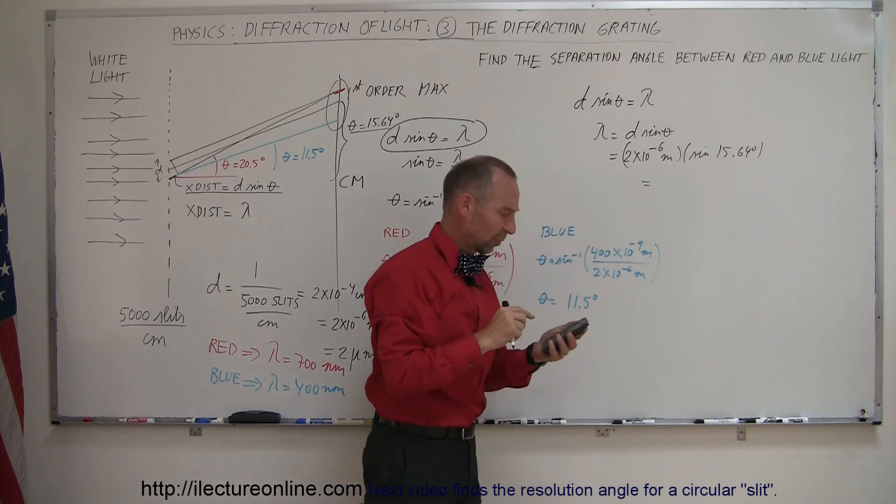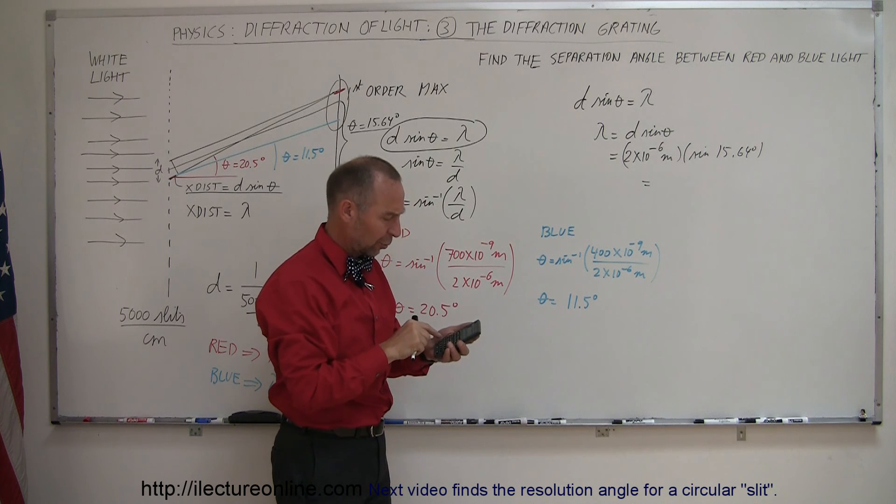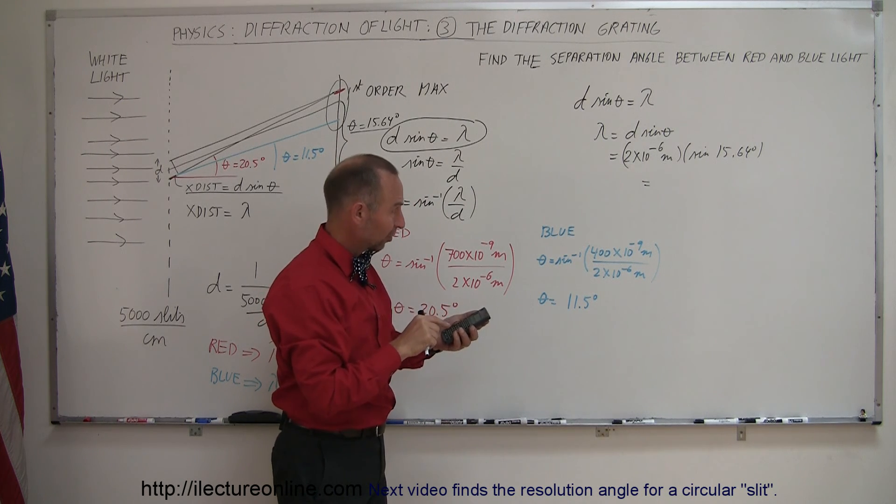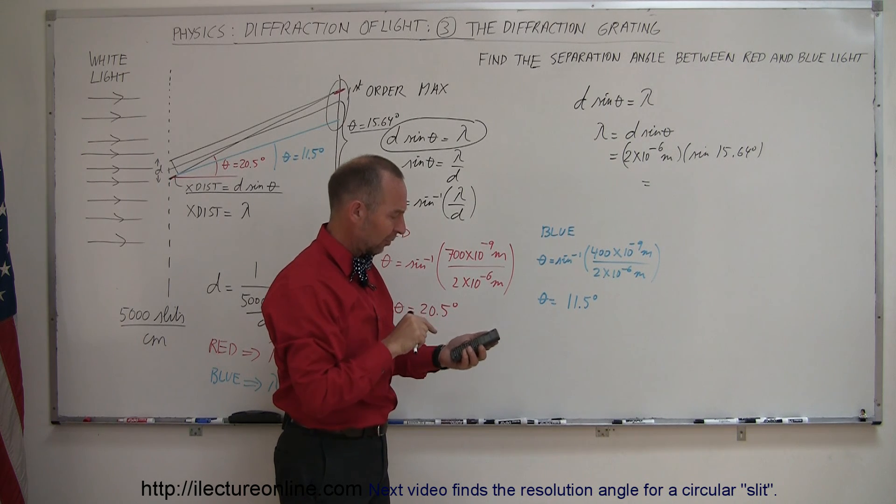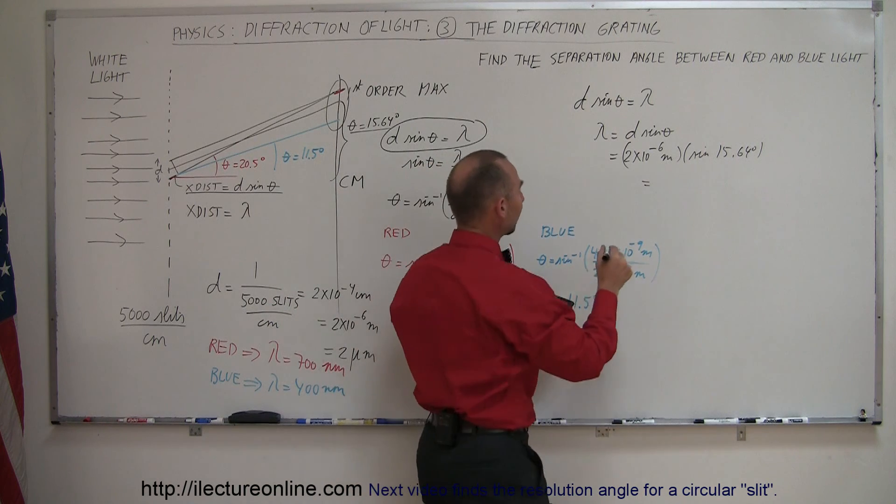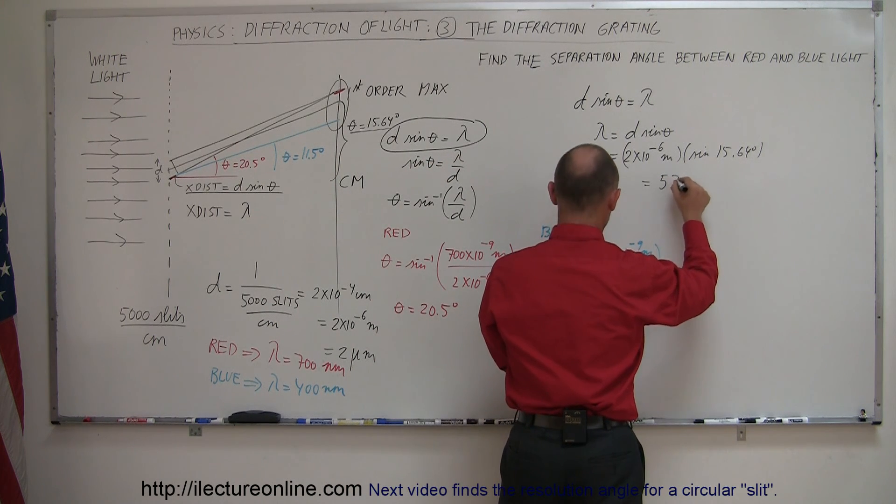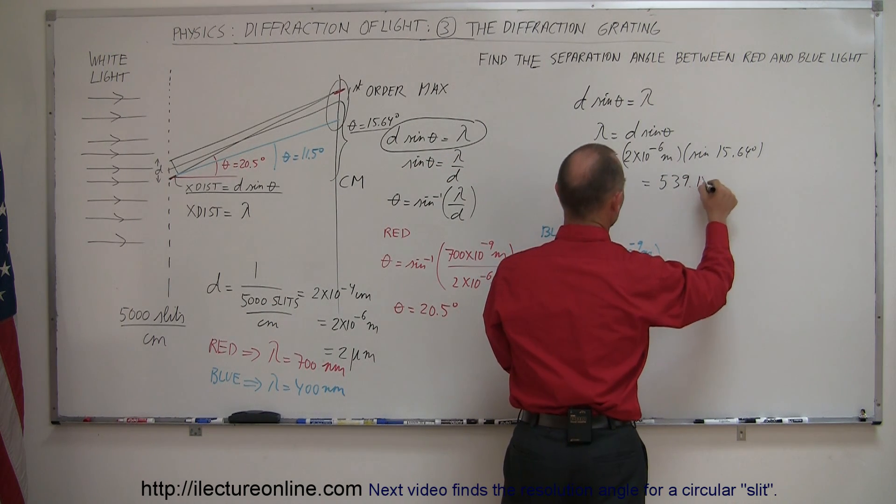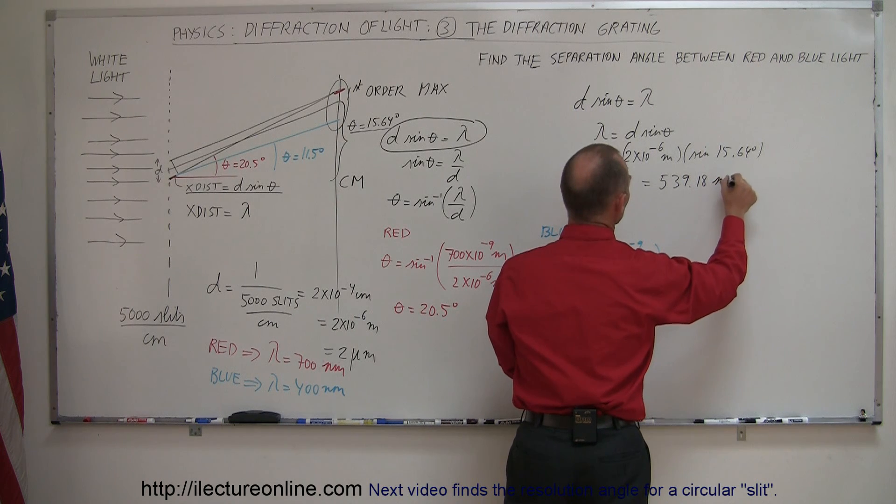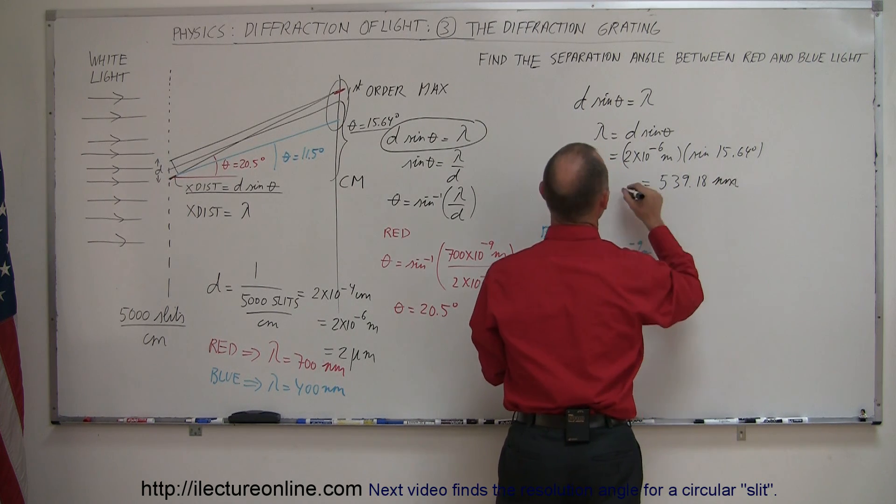And what do we get? So we go 15.64, we take the sine of that, and we multiply that times 2e to the minus sixth, and we get a wavelength of exactly 539.18 nanometers.